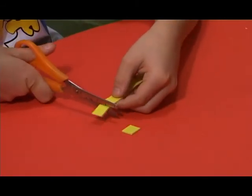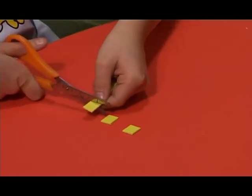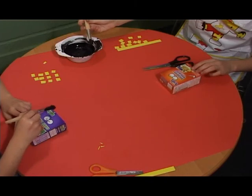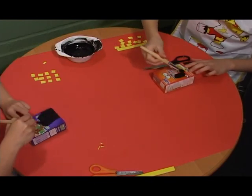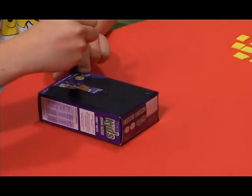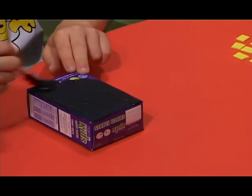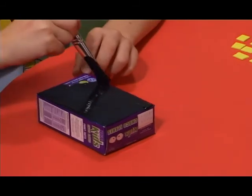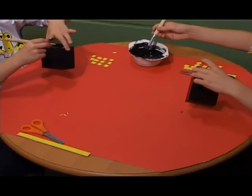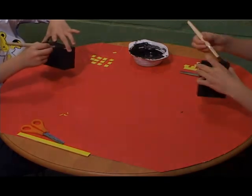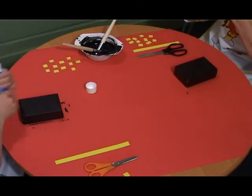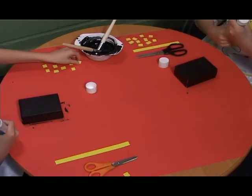Cut out yellow squares to make the windows. Paint a small box entirely in black paint. Stick the squares onto the box so that it looks as if some windows are alight and some are in darkness.